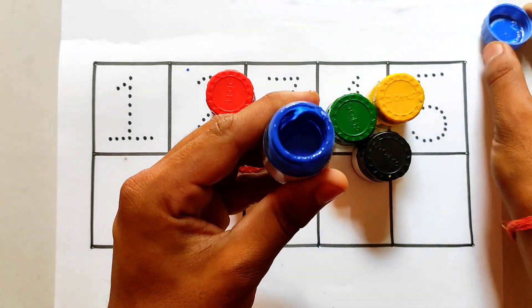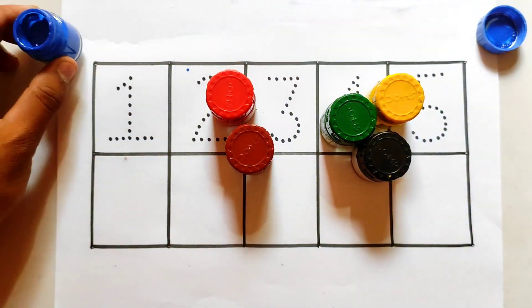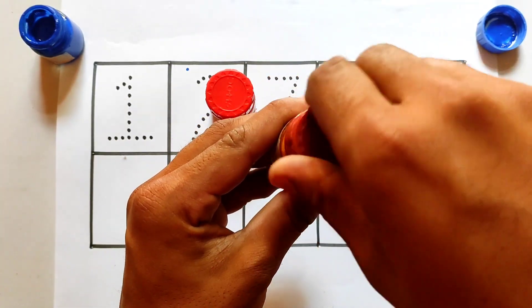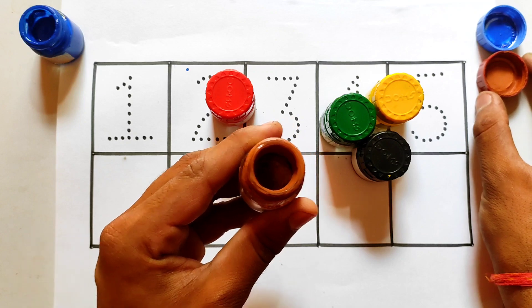First of all, we have blue color. Which color? Blue color. This is brown color.